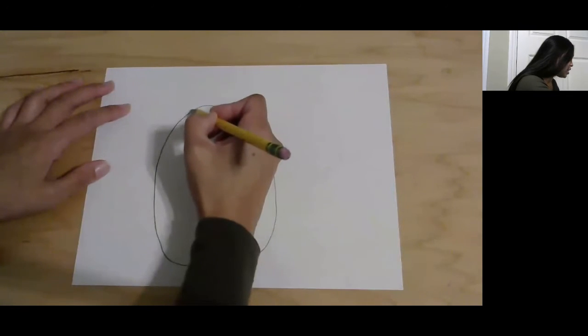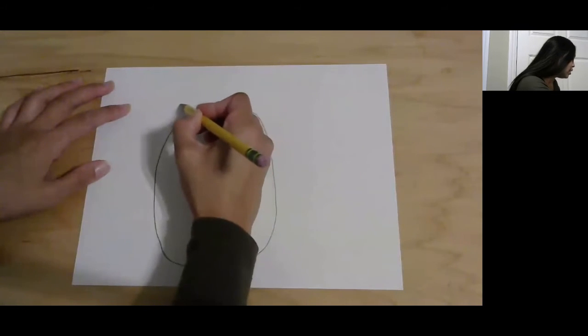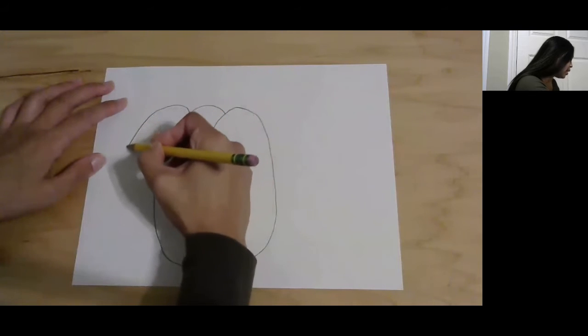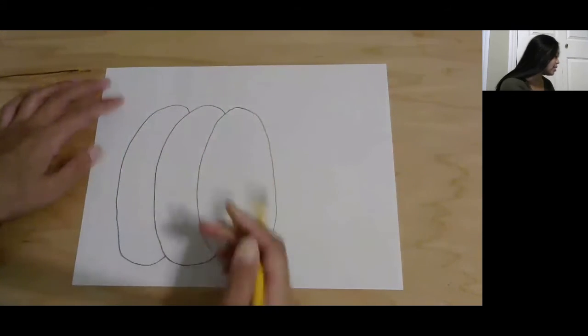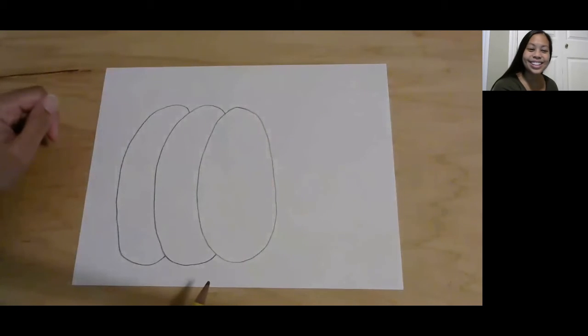One more time. Going to go up, make the letter C and go around, and then we're going to go under. Cool! Do you see that's kind of one side of our pumpkin?